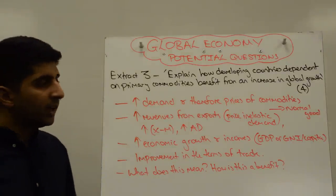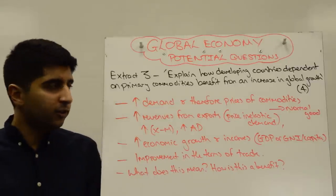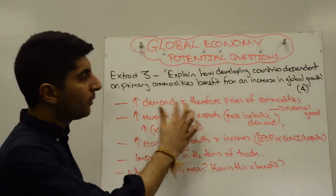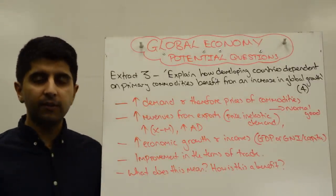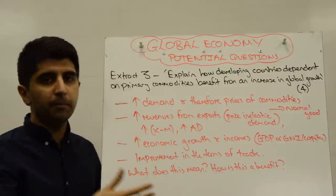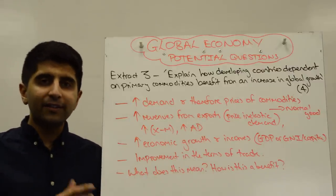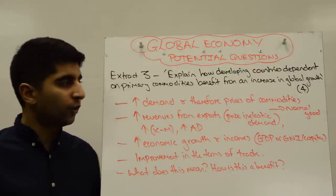Alright, so that's what you'd state. You'd use good economic terminology throughout. So, when you say increase in demand and therefore prices of commodities, you'll say, well, because primary commodities are a normal good. Yes, demand for them is income inelastic, but still a normal good.